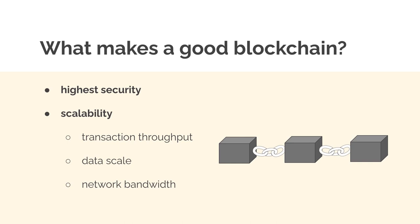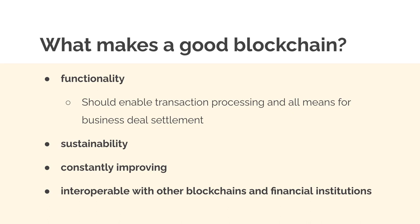What makes a good blockchain? You want as high security as possible. You want your blockchain to be scalable — able to handle high transaction throughput, meaning a lot of data and transactions, and to scale with data and handle network bandwidth. A good blockchain should also enable transaction processing and all means for business deal settlement. It should be sustainable and constantly improving, and interoperable with other blockchains and financial institutions.